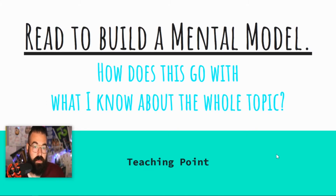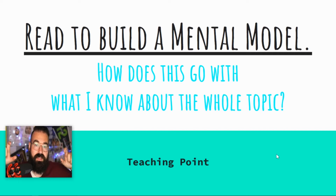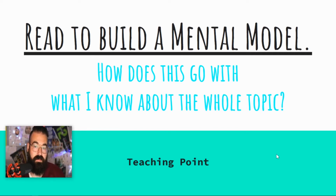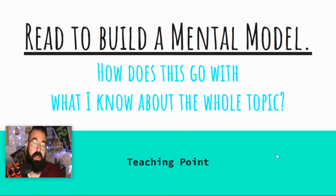In order to do that, we're going to build a mental model. That means we're going to have this idea of what teen activism is in our mind, and in order to get that, we're going to fill it with pieces that make up what teen activism is. To have those pieces that we can insert into that model, we're going to need to ask ourselves this question: how does this one thing I found out go with what I know about the whole topic?